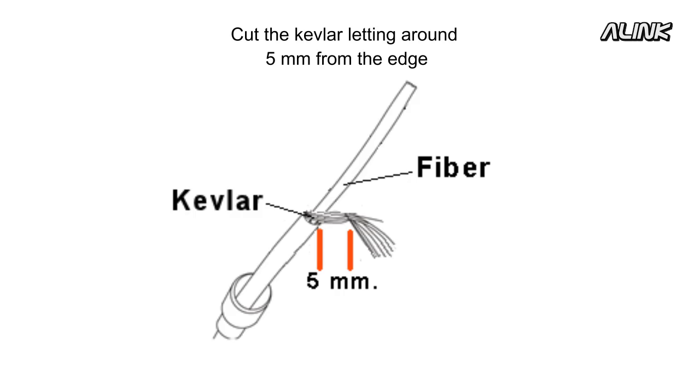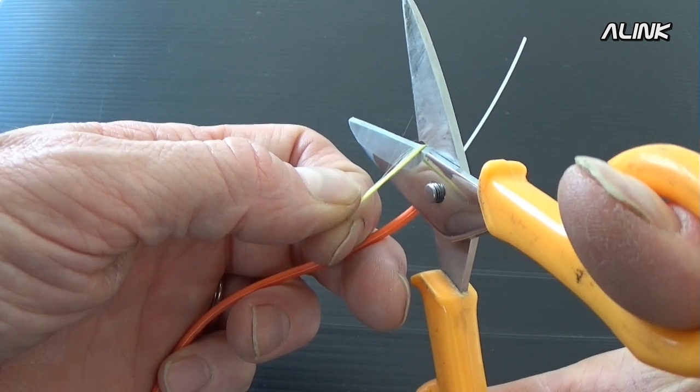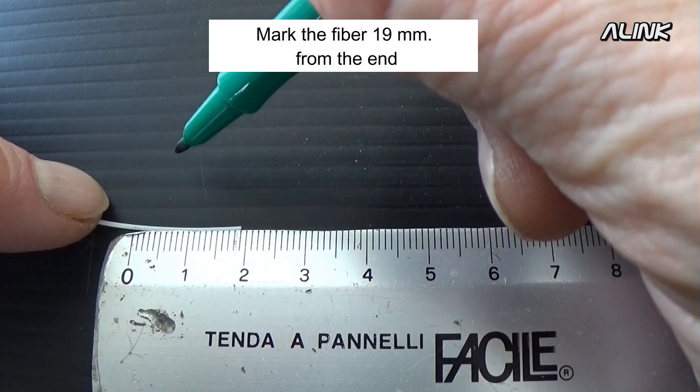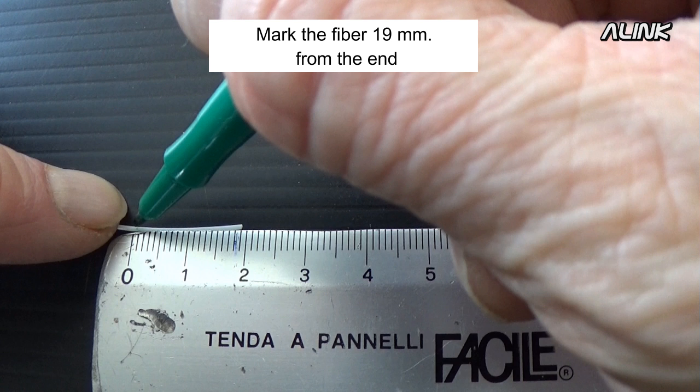Remove 34mm of the jacket, cut the Kevlar leaving around 5mm from the edge, and mark the fiber 19mm from the end.